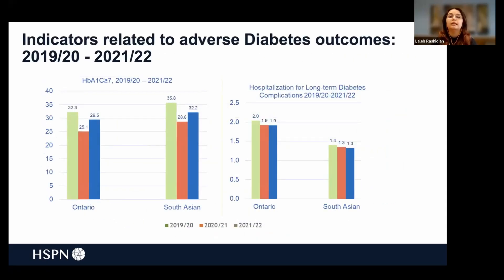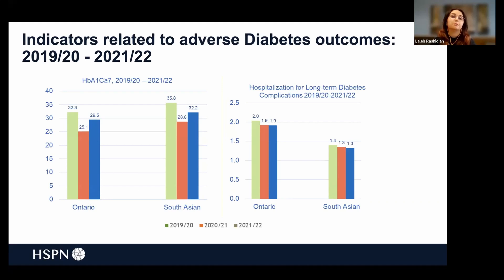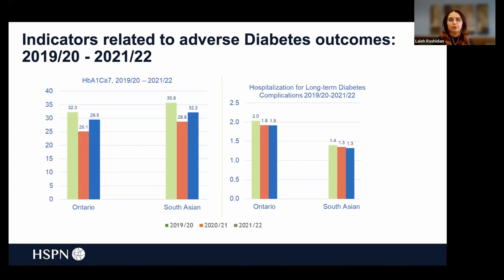This slide shows our two indicators related to adverse diabetes outcomes. On the left is the proportion of patients with poor glycemic control — high HbA1c levels. The proportion of patients dropped in 2020; however, this is due to missing data since HbA1c screening also dropped. This recovered somewhat in 2021. For hospitalization, there was very little change in the data — a slight drop in 2020 compared to the previous year, but not a large change.